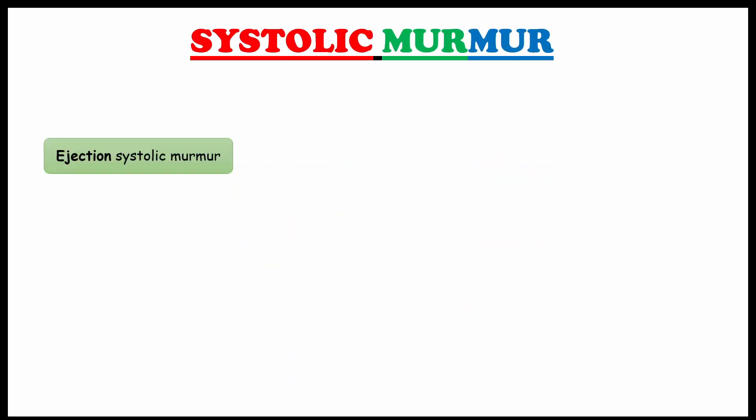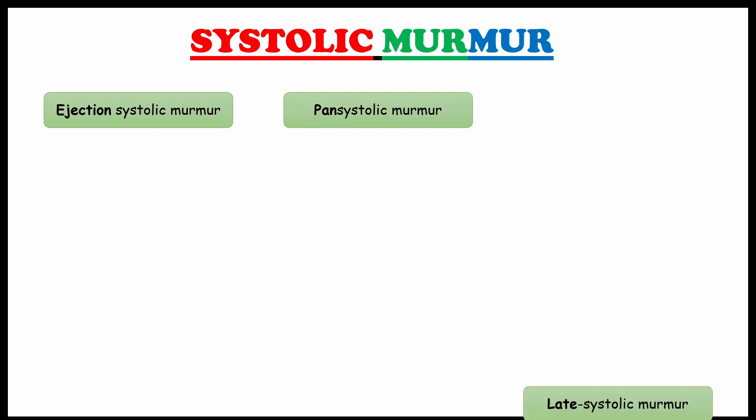Today we will see about Continuous and Systolic Murmur. Let's start with Systolic Murmur. Systolic Murmur has 3 types. Those are ejection systolic murmur, pansystolic murmur and late systolic murmur.